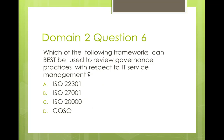Question six: which of the following frameworks can best be used to review governance practices with respect to IT service management specifically? A) ISO 22301 is on business continuity, B) ISO 27001 is on information security management systems, C) ISO 20000 is on IT service management, D) COSO is on enterprise risk management and internal controls. So ISO 20000 is your answer — the answer is C.